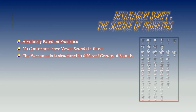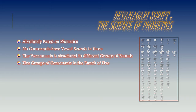Coming back to Devanagari, the Varnmala or alphabetical series is structured in different groups of sounds. There are five groups of consonants in bunches of five, with other sounds left out, and vowels form a separate segment. The five groups of consonants are also scientifically structured — they are different sounds made with combinations of different mouth muscles including tongue, lips, palate, throat, and teeth. For example: K, K, G, G, G-Na.